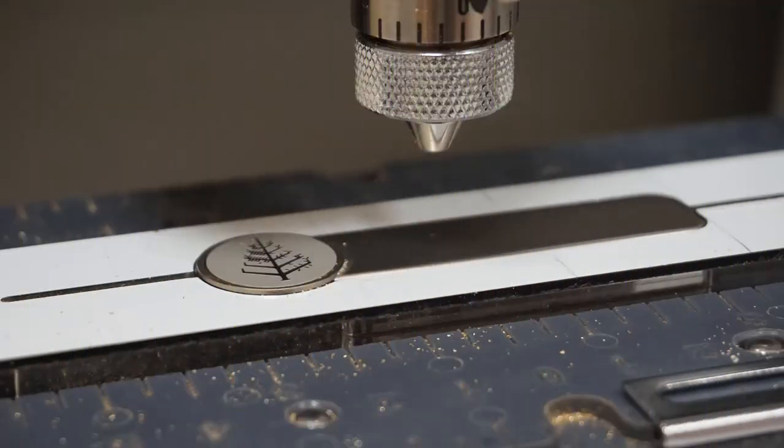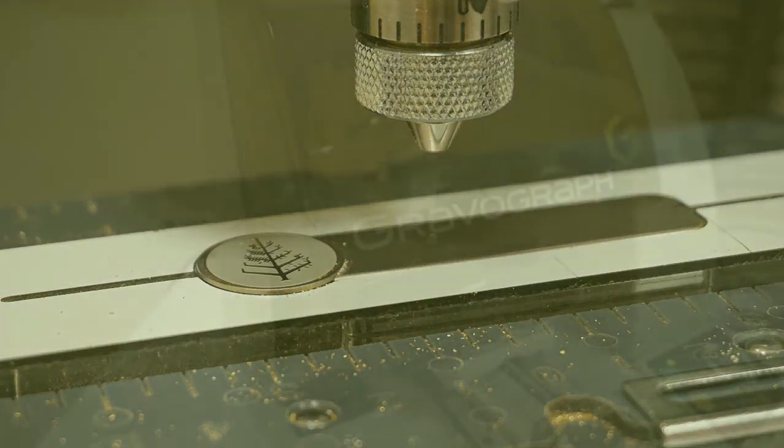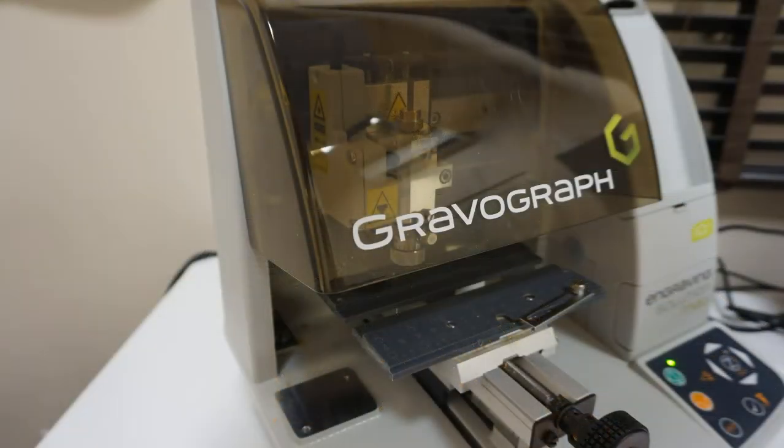Hi, I'm Rob Borum and thank you for taking the time to watch this video. We're going to have a look at how to create a Four Seasons employee name badge using the Gravograph M20 IQ engraver.